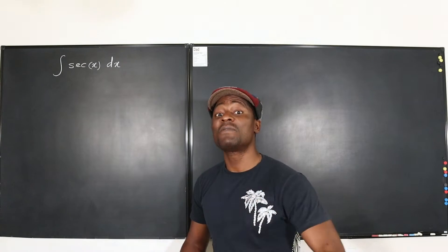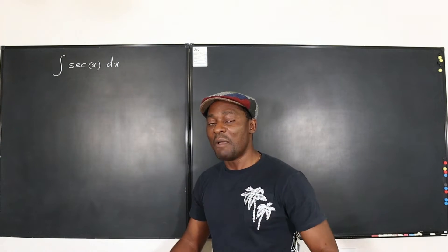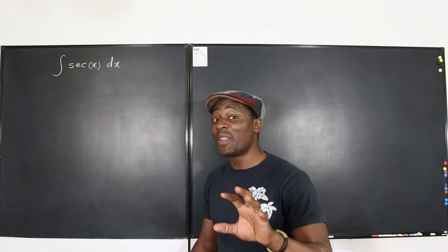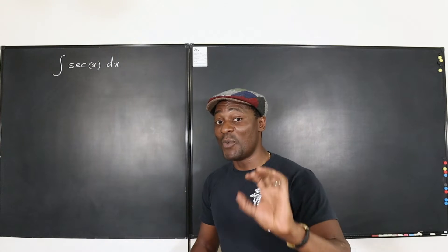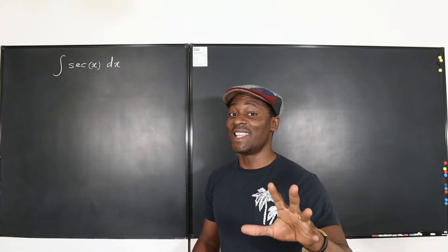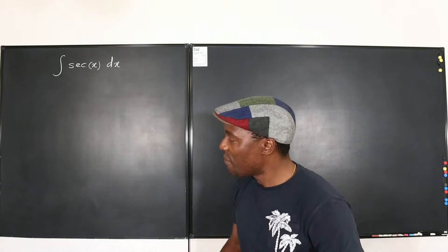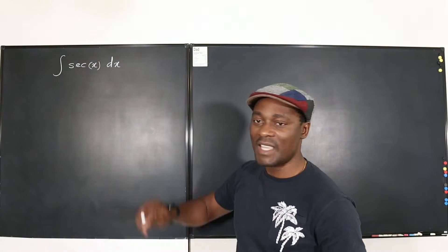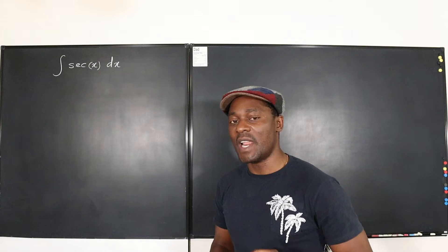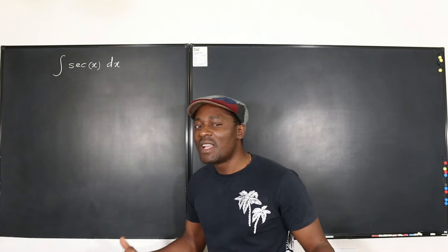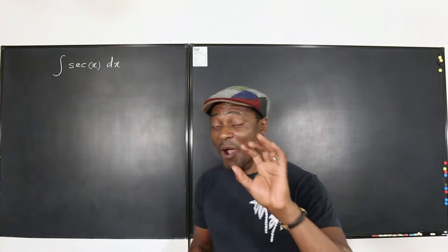There are about four different ways of solving this, but I'm going to take the one that brings in all the techniques I want you to see in this video. So let's start by rewriting secant x as 1 over cosine x. It's a rational expression and let's see what else we can do.